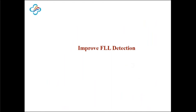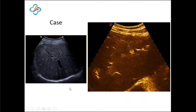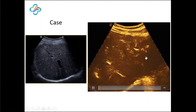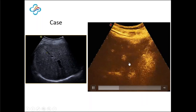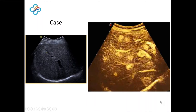The first part is improved detection. For this patient, he received liver transplantation six months ago because of HCC. In CEUS, many more lesions could be shown for this patient — it's a concerning finding, but we can see a lot more lesions here.